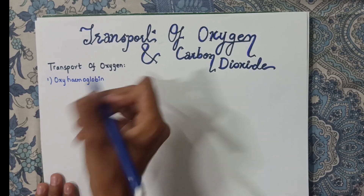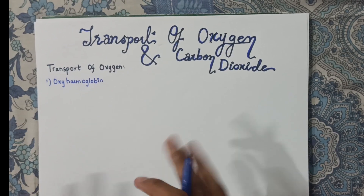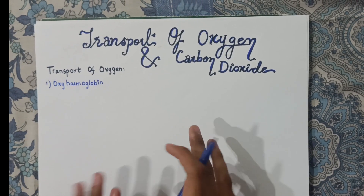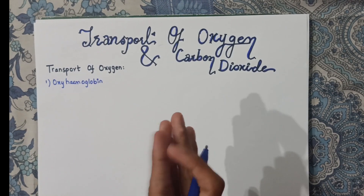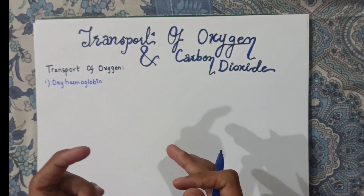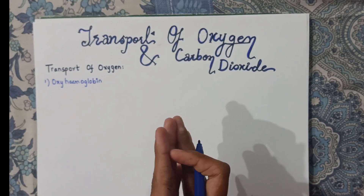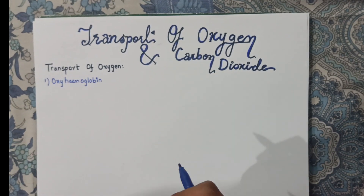What is hemoglobin basically? We all know that our red blood cells contain an iron-containing structure. Hemoglobin is present in red blood cells and it is this iron-containing protein that is central to oxygen transport.